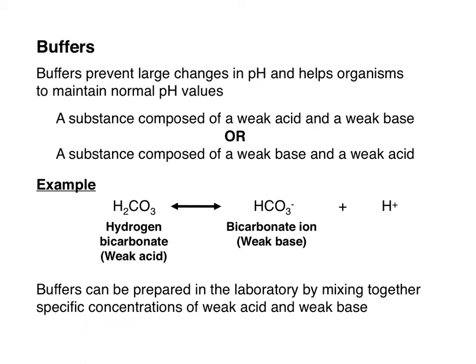A buffer can be made by mixing an acid with a base. In this example, the acid is hydrogen bicarbonate and the base is bicarbonate ion. If the base comes in contact with H+, it regenerates the acid. So if the H+ concentration were to increase, the bicarbonate ion in the buffer would neutralize the added H+, preventing the pH from changing very much. Conversely, if base (OH-) is added, it reacts with H+ to form water, meaning H+ is being lost from solution.